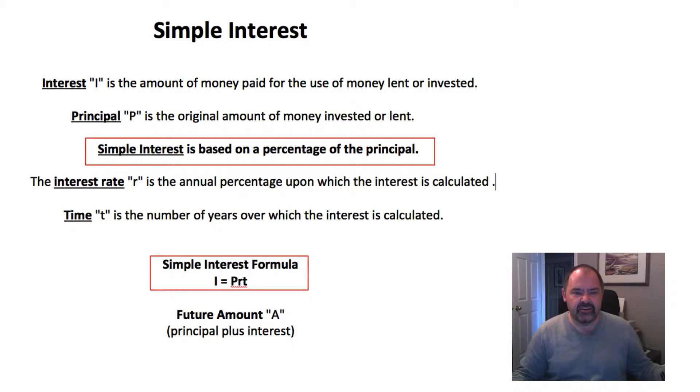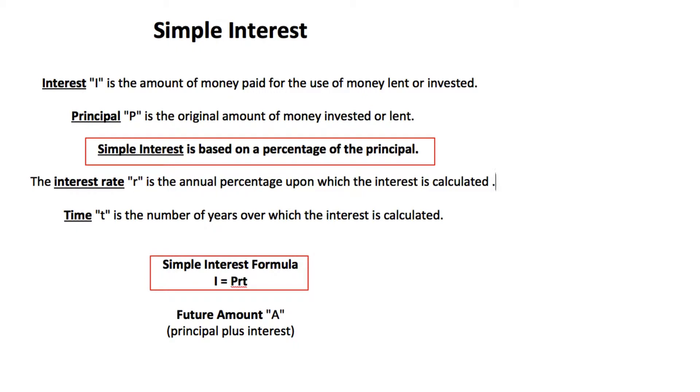interest is just the amount of money that's paid for the use of money that's lent or invested. Just a couple of basic terms here before I explain further. Principle is the original amount of money that we're talking about, the original amount of money upon which the interest is based. That's the principle which we use the letter P for.